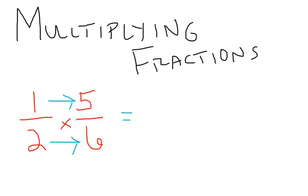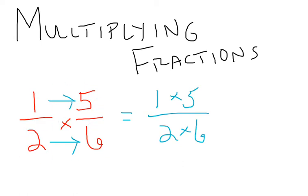So 1 half times 5 over 6 really turns out to looking like 1 times 5 over 2 times 6. So I'm multiplying my numerators and I'm multiplying my denominators. Now that I have it set up, I can just do the multiplication and I'll be all done.